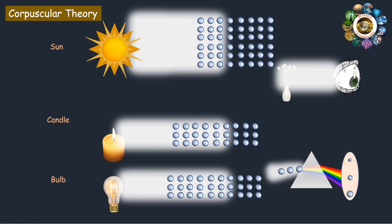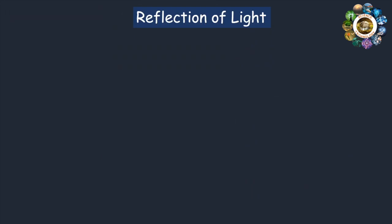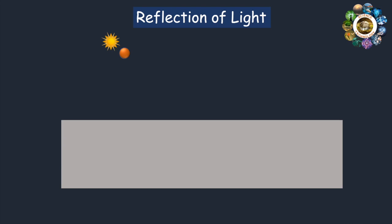The corpuscular theory explains the reflection of light in exactly the same way as the reflection of a perfectly elastic ball from a rigid plane. When the corpuscles hit the reflecting surface, they are reflected in such a way that the angle of incidence is equal to the angle of reflection. This is due to the repulsion between the corpuscles and the reflecting surface. Thus, the laws of reflection were fulfilled.